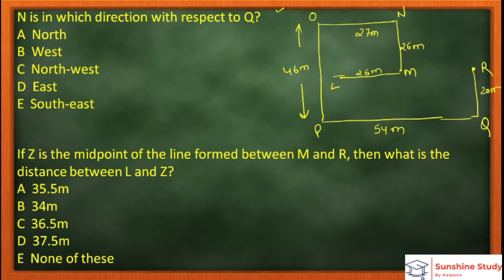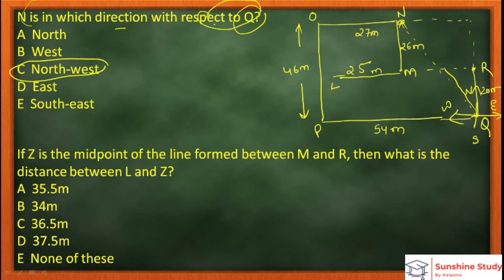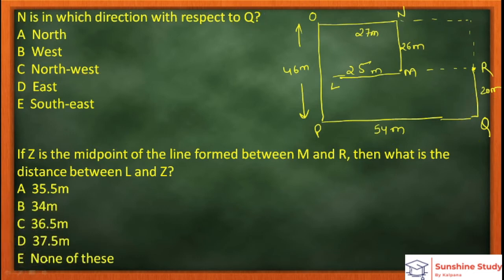Let's move to the questions — I've already drawn this diagram. First question: in which direction is N with respect to Q? You can see here: this is N, and this is Q. If I draw directions from Q — North is up, East is this side, South is down, West is the other side — N is falling between North and West.